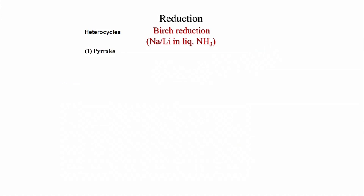Pyrroles can also react under Birch conditions. For 2-substituted pyrroles where R2 is generally an ester or amide (EWG), treatment with sodium in liquid ammonia/THF with tert-butanol followed by alkylation with methyl iodide gives 2,5-dihydropyrrolidine with a quaternary center at position 2.